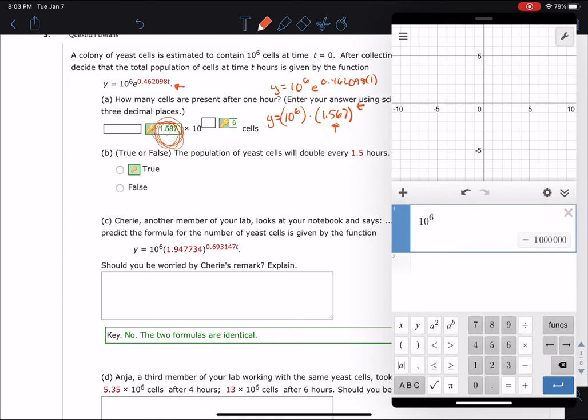And to test it, I'm just going to input it in 10 to the sixth power. And that's going to be multiplied with parentheses 1.947734. Close that parentheses and raise that to the 0.693147. And then to the first power and see if it matches. And it does match.